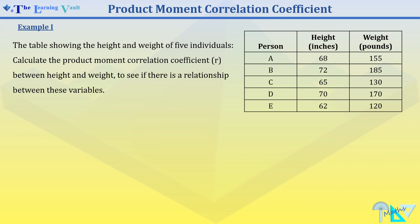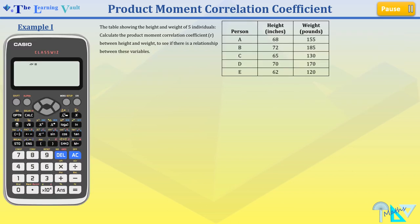Example 1. You may pause and have a go. In this example, I'll be using the Casio ClassWiz calculator to demonstrate how we find the PMCC.